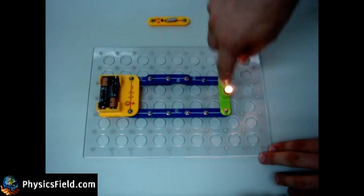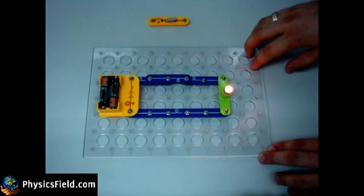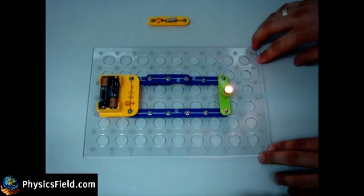Now there is a complete path for charges to flow. And this is called a closed circuit.